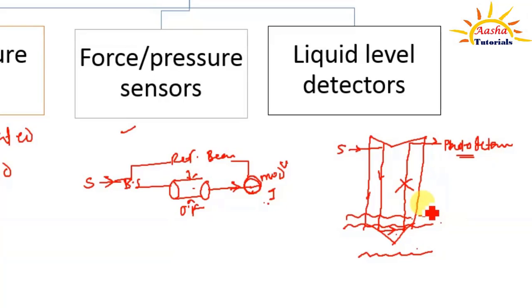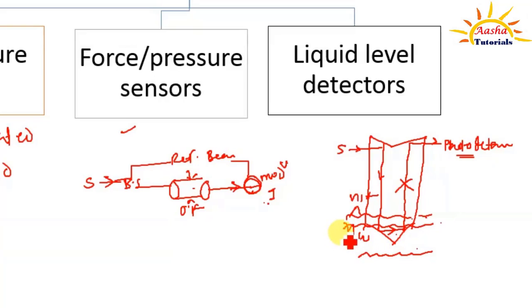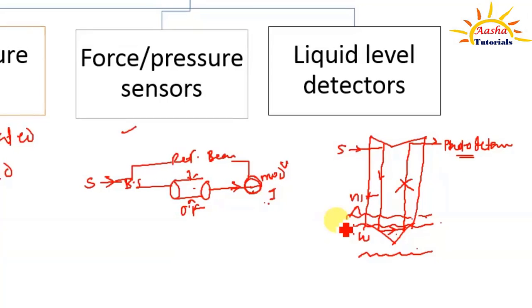For such a liquid level detector, the refractive index of the optical fiber must be less than the refractive index of water. There are many more applications of optical fiber which you can find on the internet or through reference books. Now we will discuss some important advantages of optical fiber.